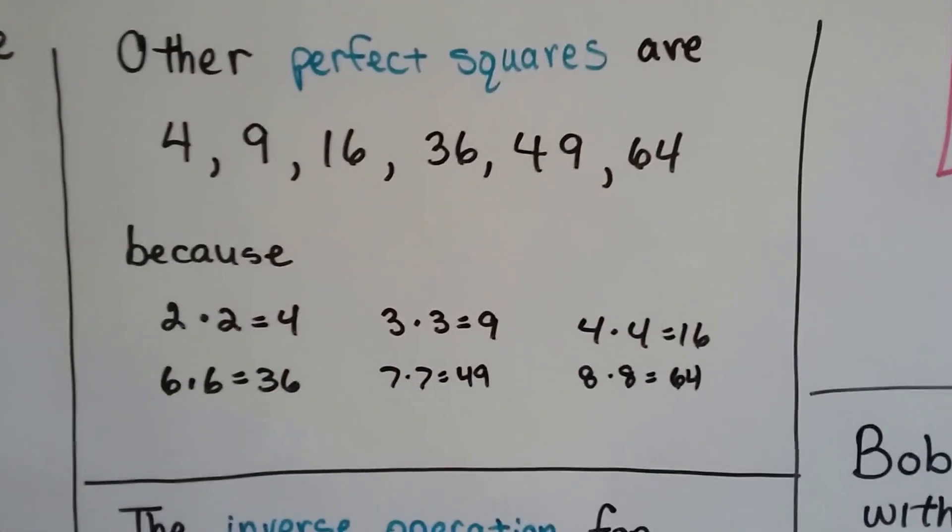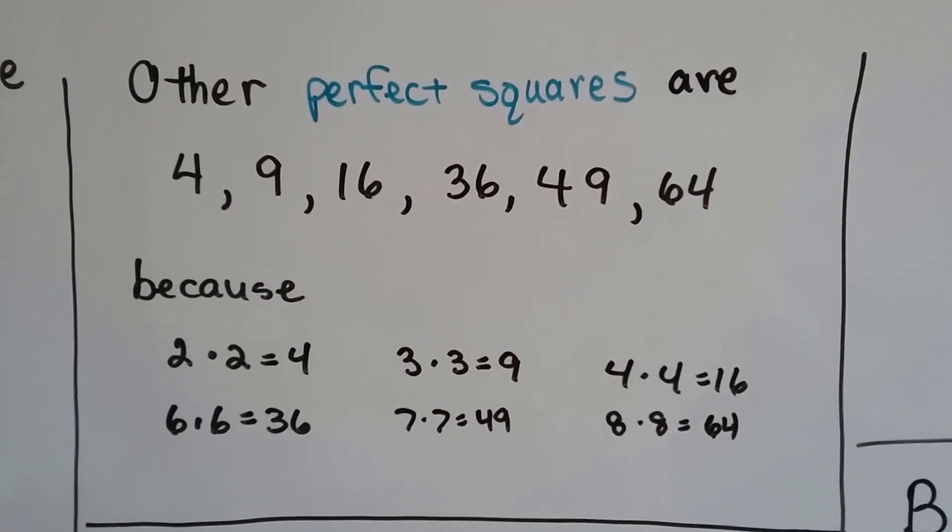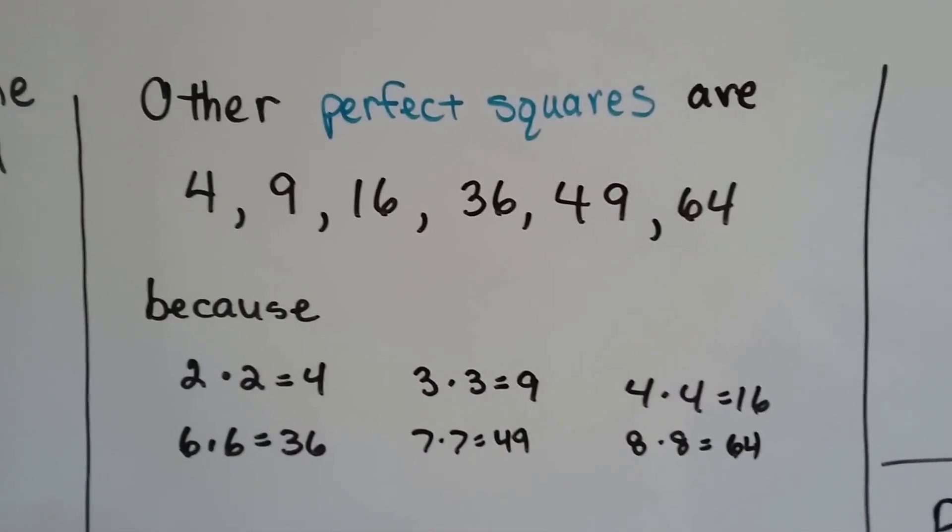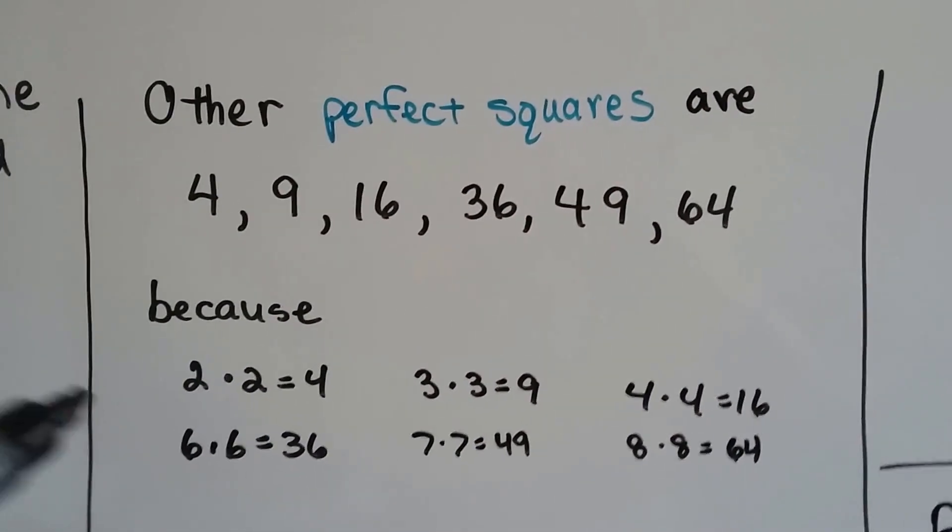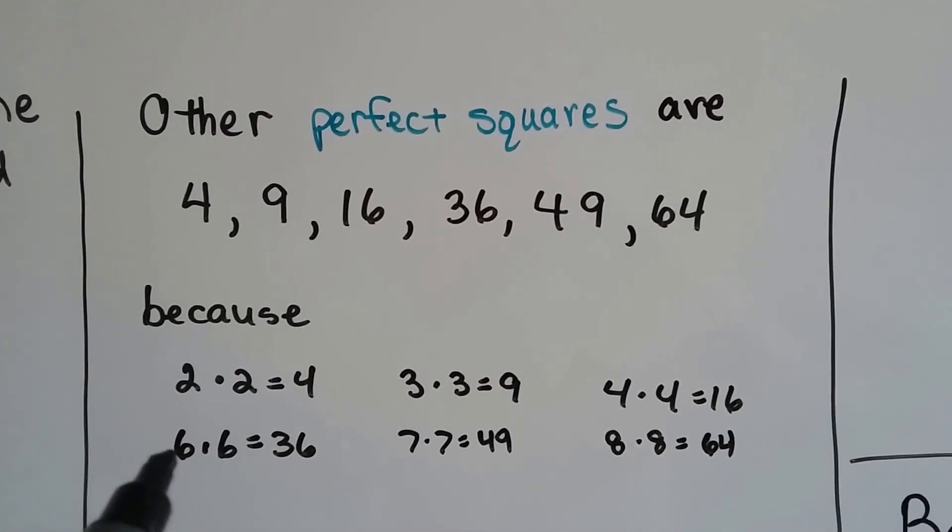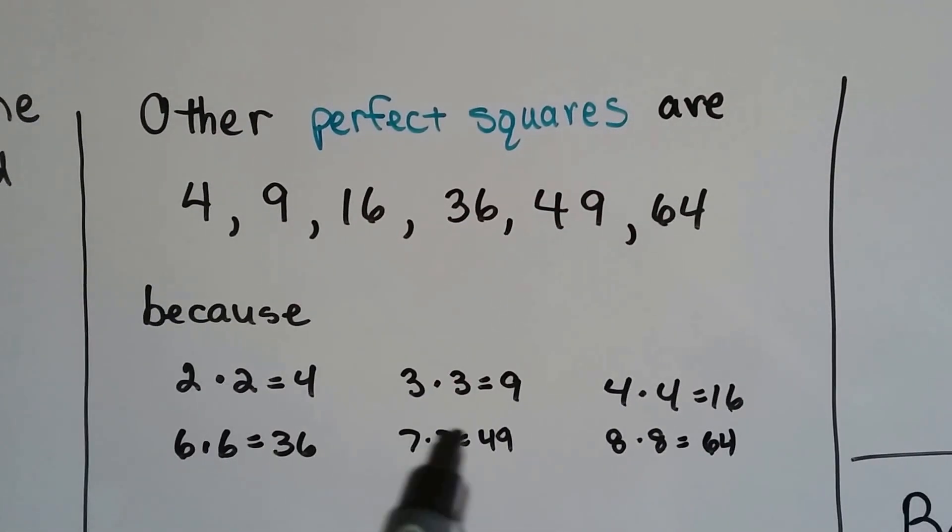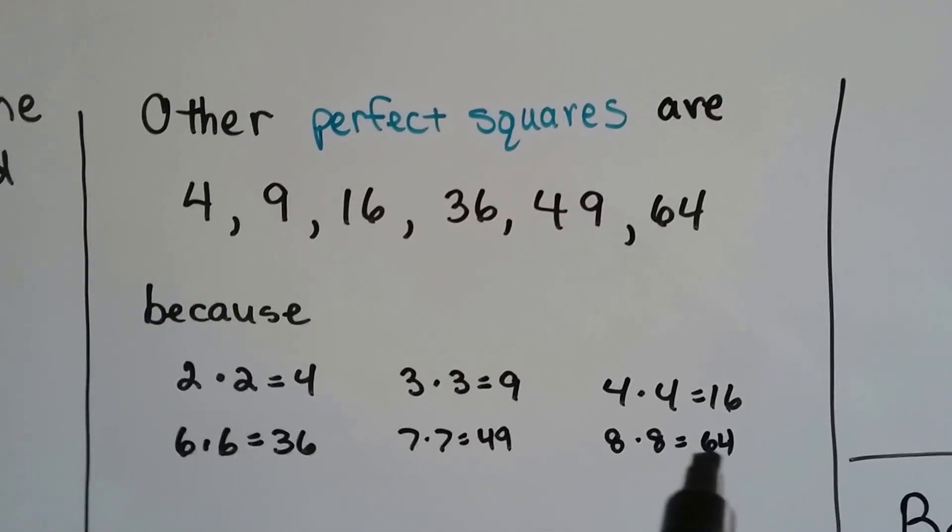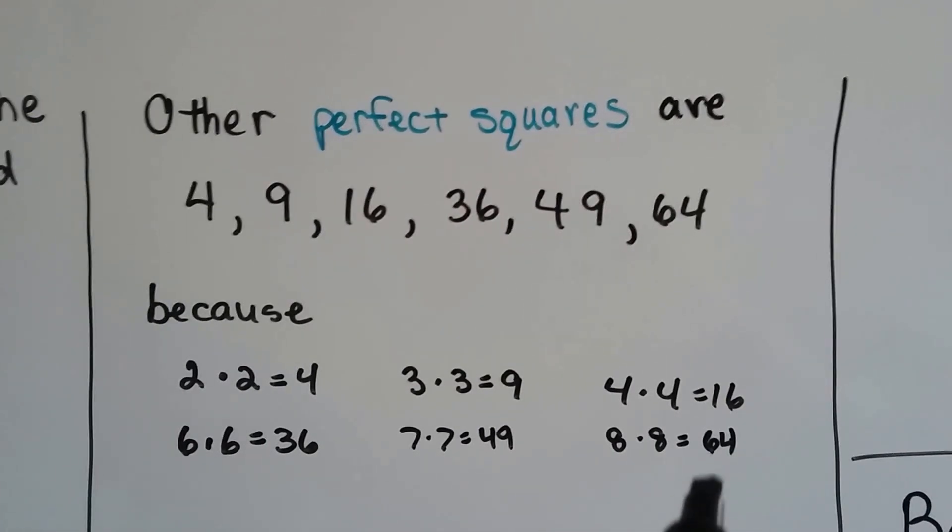Other perfect squares are 4, 9, 16, 36, 49, 64 because 2 times 2 is 4, 3 times 3 is 9, 4 times 4 is 16, 6 times 6 is 36. You multiply the number to itself and it makes that product.